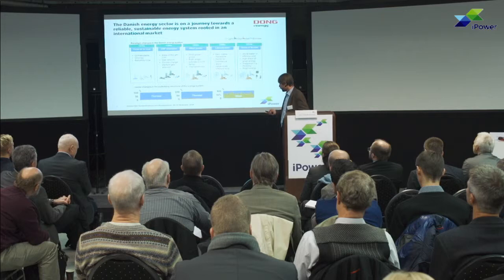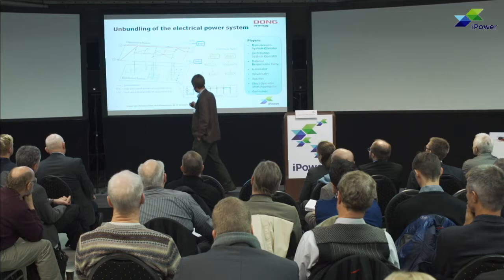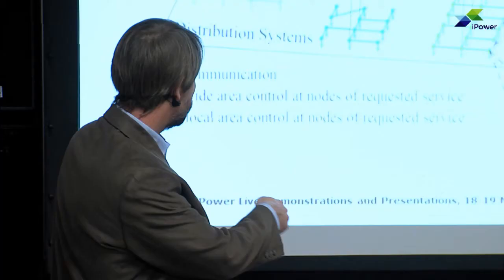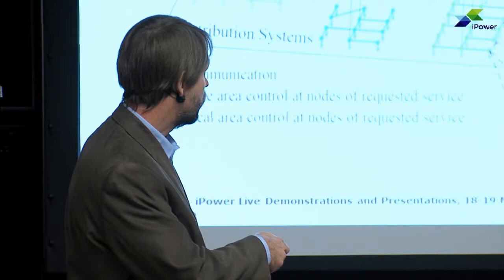So we have inherited from this process a system which looks like this. If we say we have the power generation up here, then you can see that the power is flowing into the transmission system, down to the distribution system and eventually down to the customers. We have the transmission system which is voltages above 100 kV, and down here at the distribution we have below 100 kV. And we have a lot of DSOs down here — in Denmark, the last time I looked, we had about 64. So this is a lot of smaller companies.